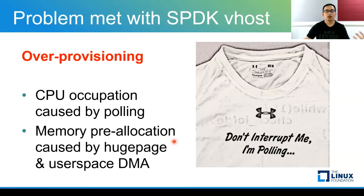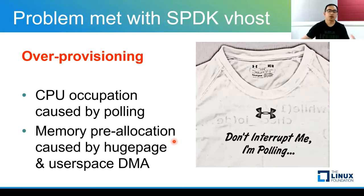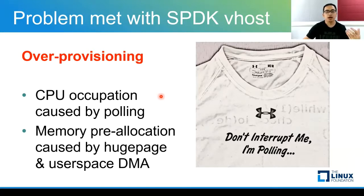For memory, due to user-space device DMA operations, SBDK requires memory to be pre-allocated as huge page memory. The memory pre-allocation and CPU occupation required by SBDK vhost are barriers to overprovisioning all server resources to containers.